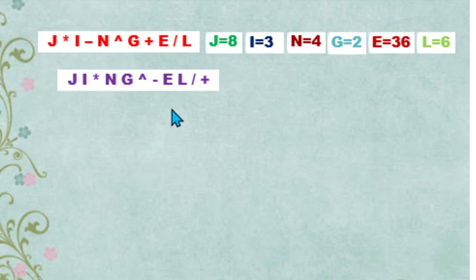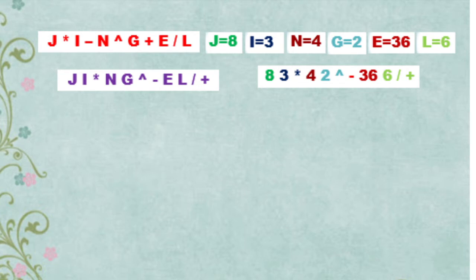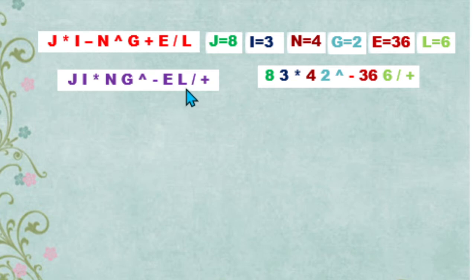After converting our infix expression into postfix expression, we are going to substitute the values of our operands. We substitute 8 for j, 3 for i, then the multiplication operator, 4 for n, 2 for g, then the exponent symbol, the subtraction operator, 36 for e, 6 for l, then the division operator and addition operator.